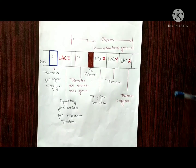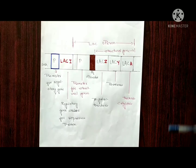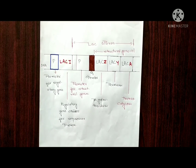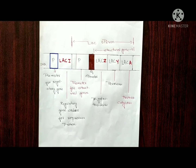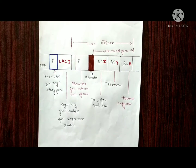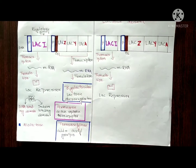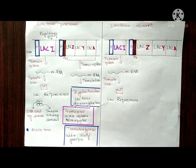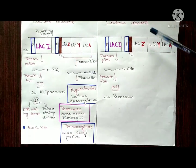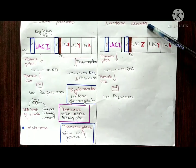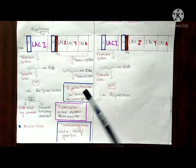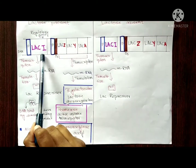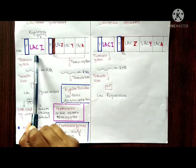The lac operon shows the catabolism of lactose. Now let's look at how the lac operon is regulated positively and negatively. We have two cases: when lactose is present and when lactose is absent. The lac regulatory gene lacI continuously produces mRNA, and after translation, the lacI repressor protein is made.